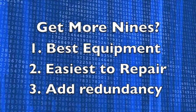How do you get more nines? Buy the best equipment that's the easiest to repair, and then add redundancy. Highly reliable systems often include multiple power supplies and processors, plus battery backup, diesel, or natural gas generators for longer power outages than batteries can handle. You'll also need multiple diverse communication lines, and extras of whatever else is likely to fail.